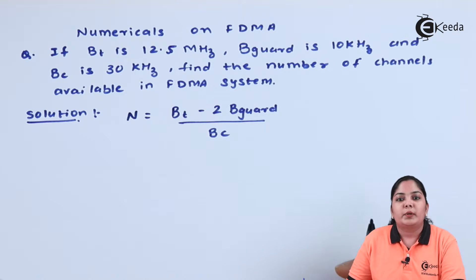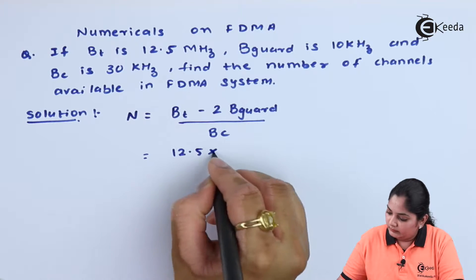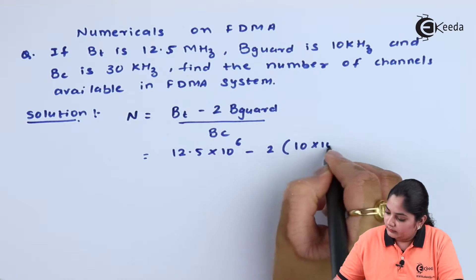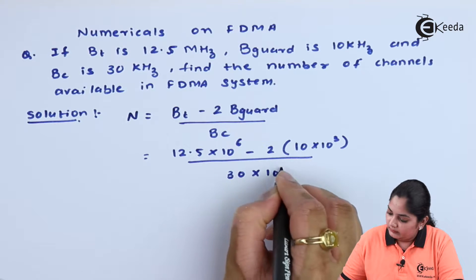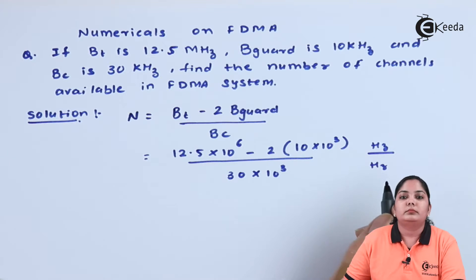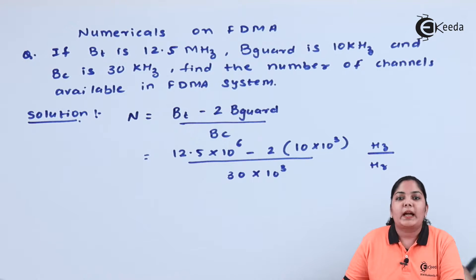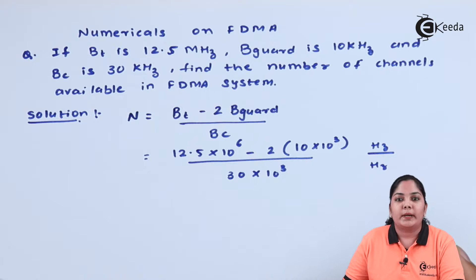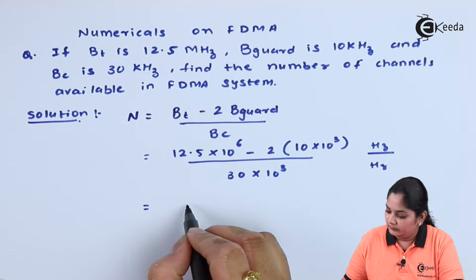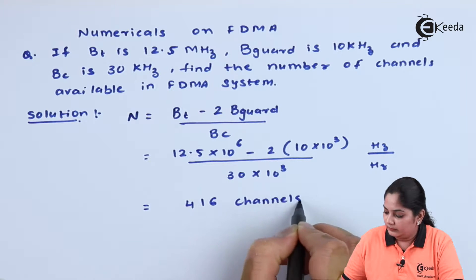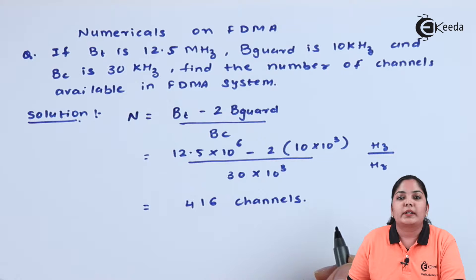In this numerical, we have been provided with all the values. Let's substitute: I have substituted the total bandwidth in hertz, the guard band in hertz, and the individual channel bandwidth in hertz. The answer is 416 channels available in the entire system for use.